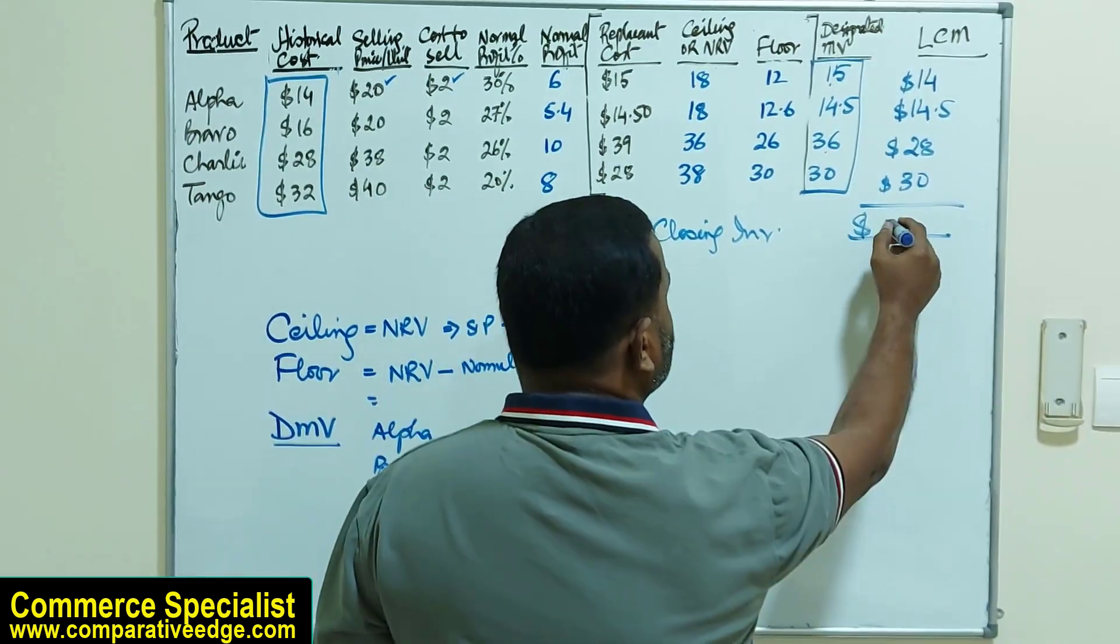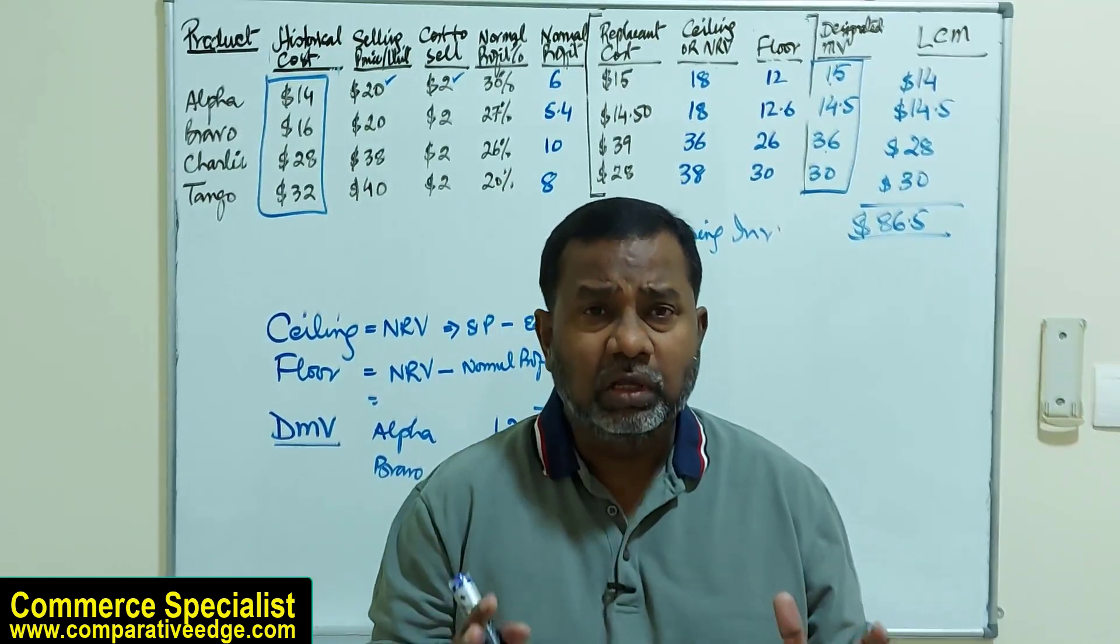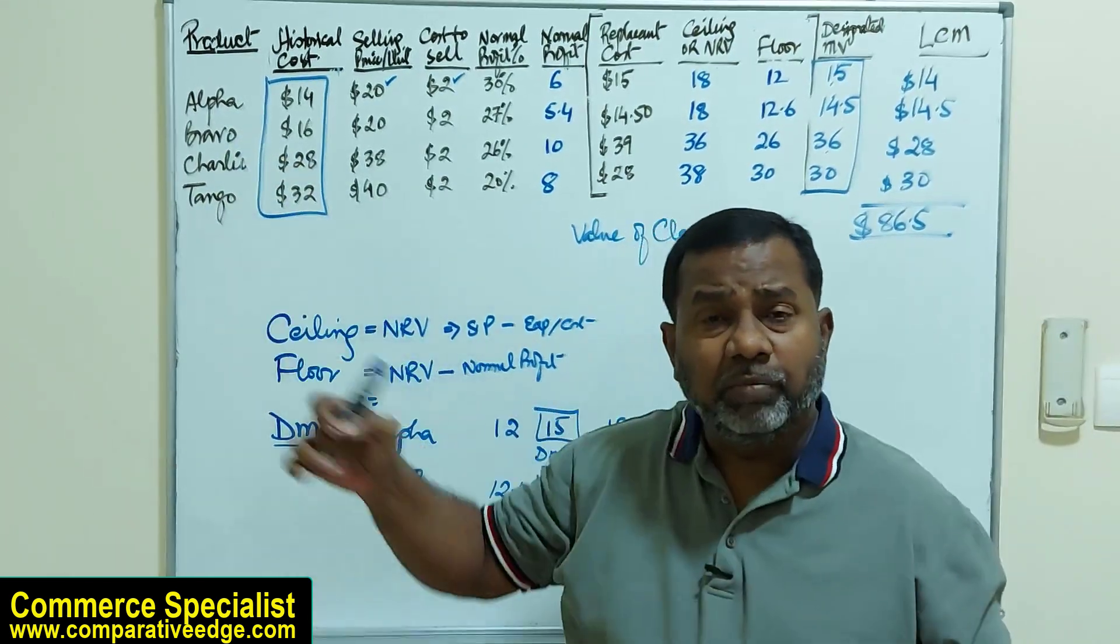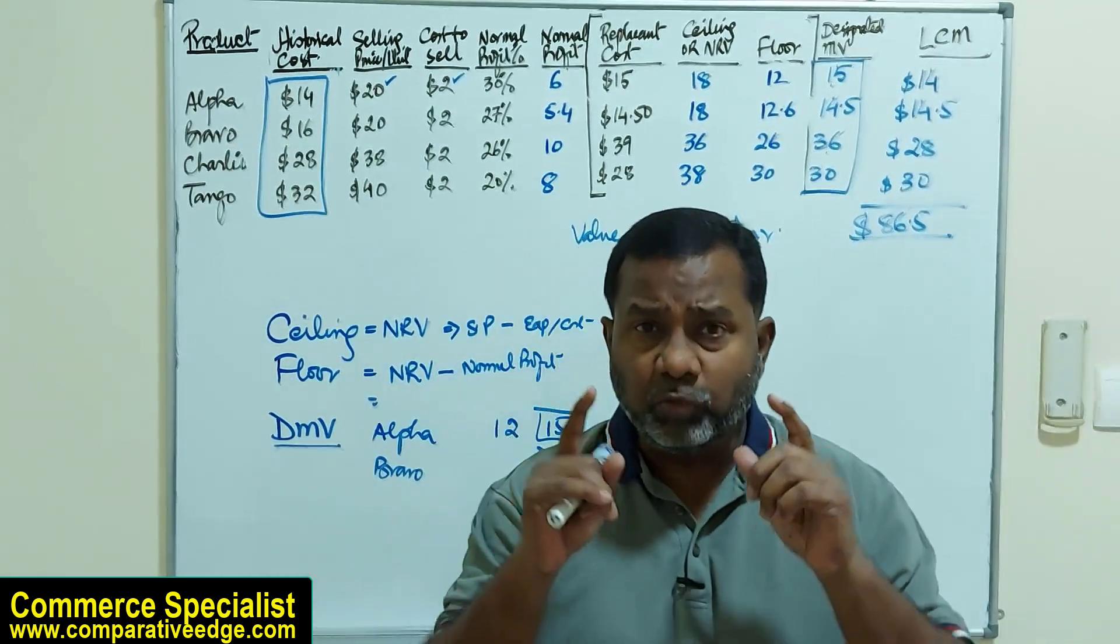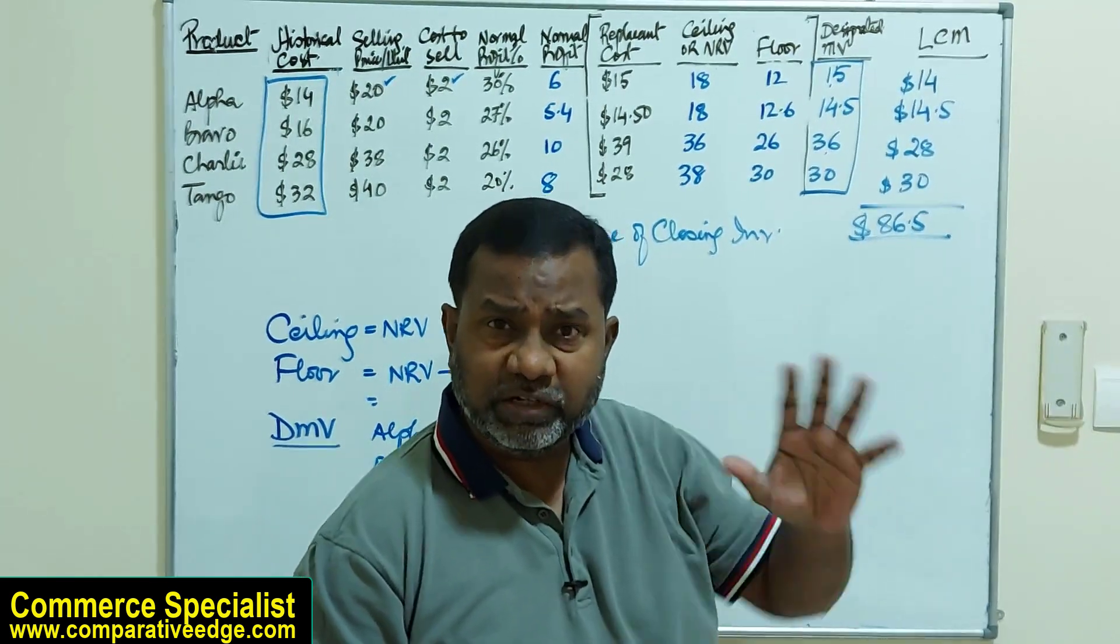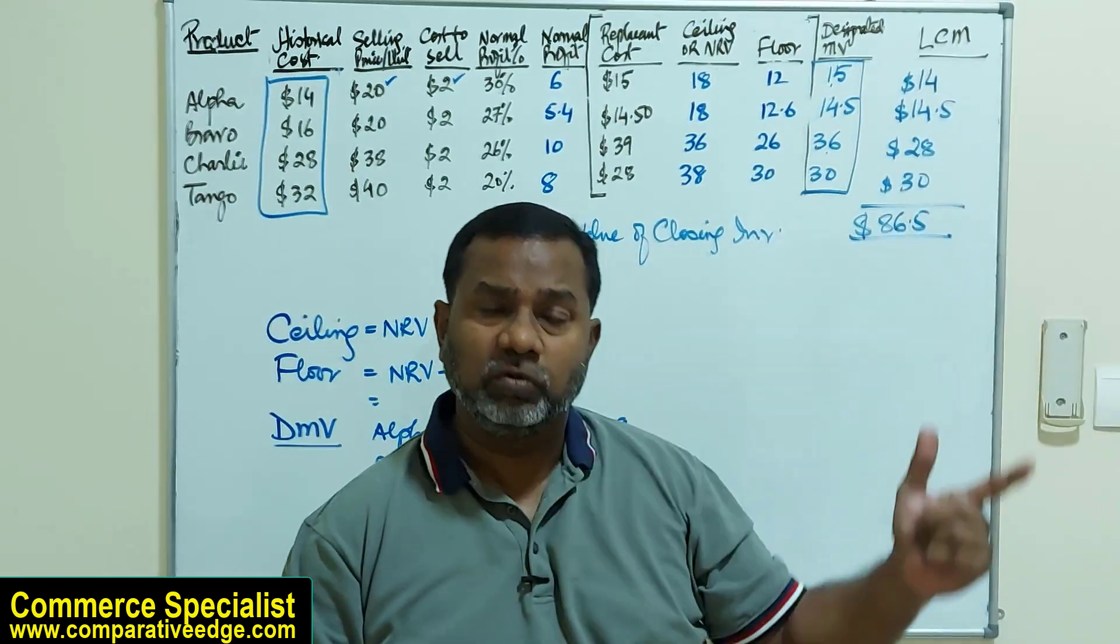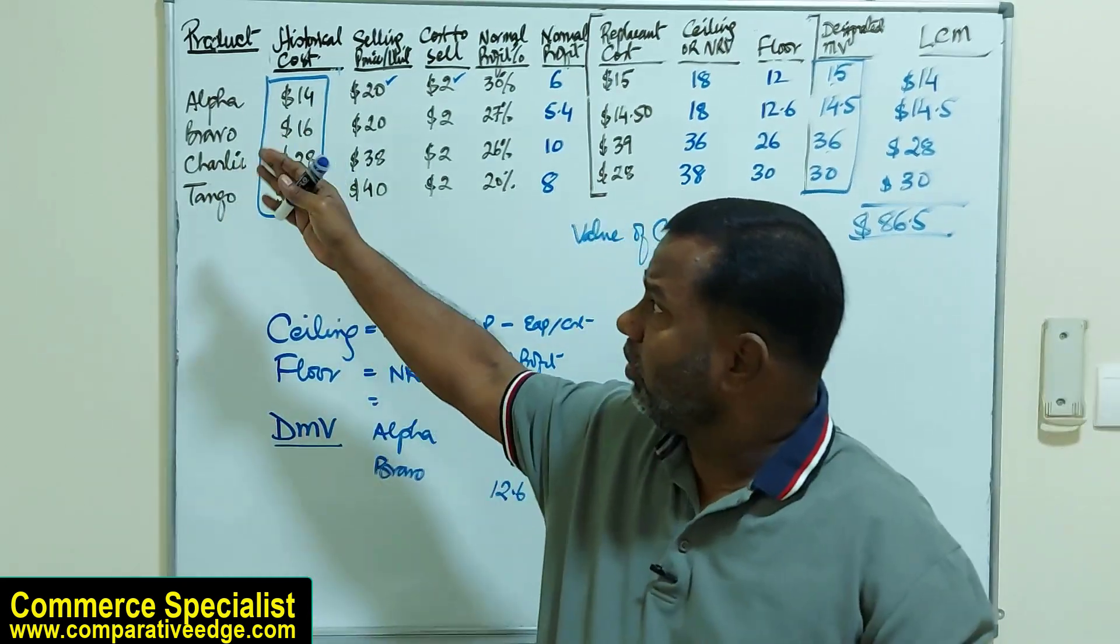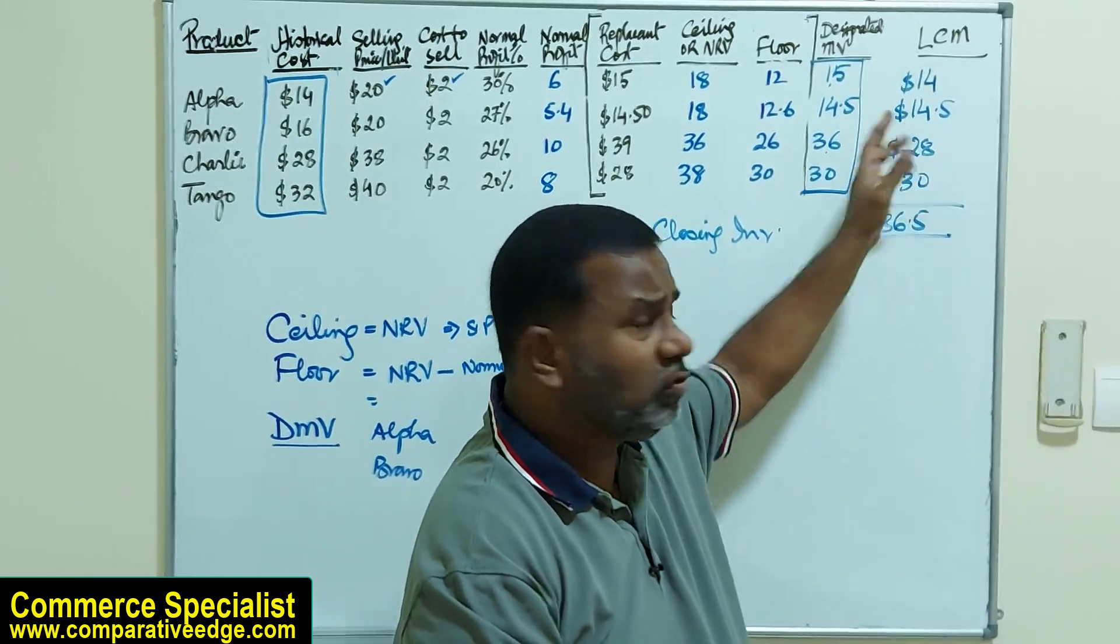The entire question is based on the assumption that I have one unit of each product. But if there are many units, for example if I have 10,000 units of Alpha, what I'm going to do is first calculate the LCM, which is lower of cost or designated market value, which is $14, then multiply it by 10,000 units. Similarly for Bravo, Charlie, and Tango. Once you have calculated LCM for one unit, multiply by the number of units, then do the grand total.